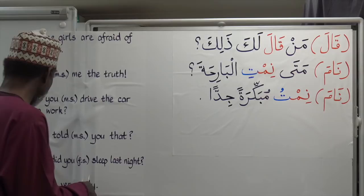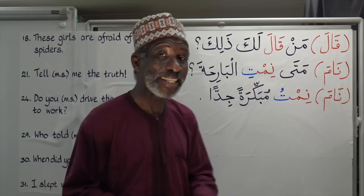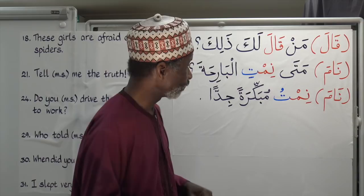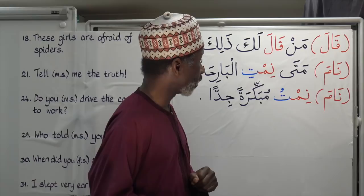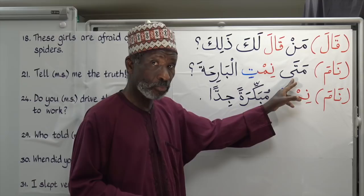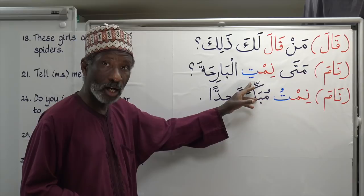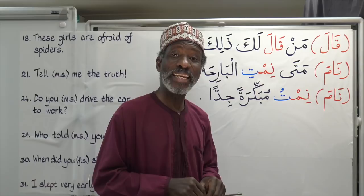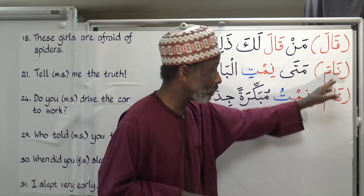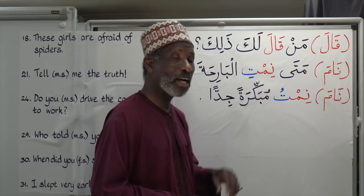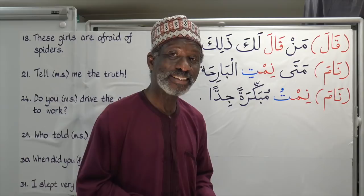Number 30: 'When did you sleep last night?' — speaking to a singular feminine. Nama is the verb to sleep and it is a hollow verb. Mata is 'when' — your question word. Conjugated for feminine singular: Nimti. Mata nimti al-barihata — 'When did you sleep last night?' To answer in first person: Nama becomes Nimtu. Nimtu mubakkiratan jiddan — 'I slept very early.'